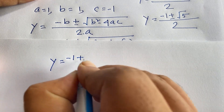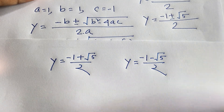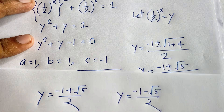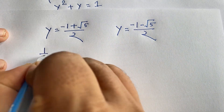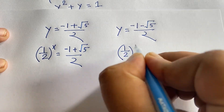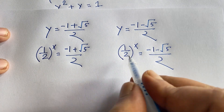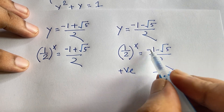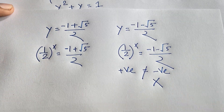We get two solutions: y = (-1 + √5) / 2 and y = (-1 - √5) / 2. Recalling that y = (1/2)^x, this value is always positive. But (-1 - √5)/2 is always negative, so positive cannot equal negative — that solution is rejected. Our valid solution is (1/2)^x = (-1 + √5) / 2.